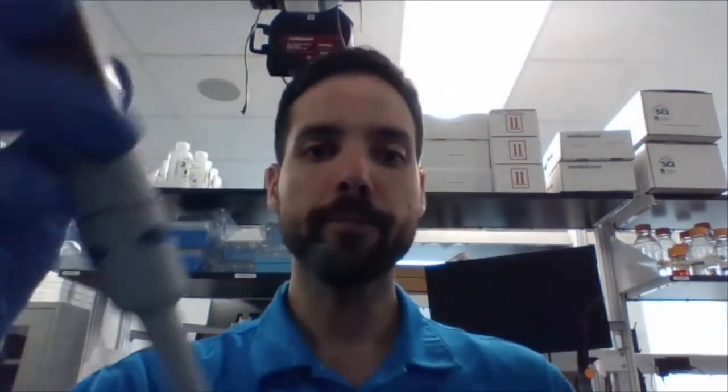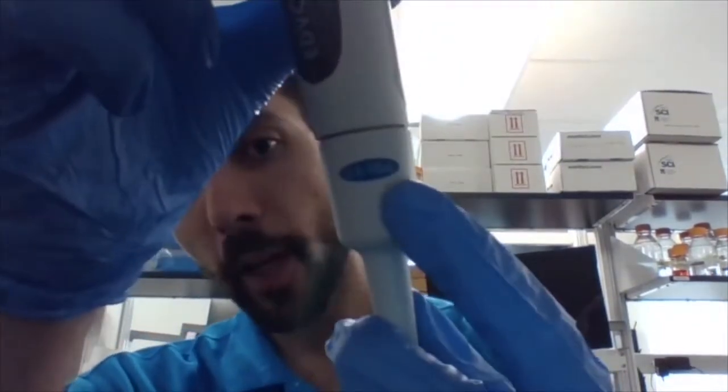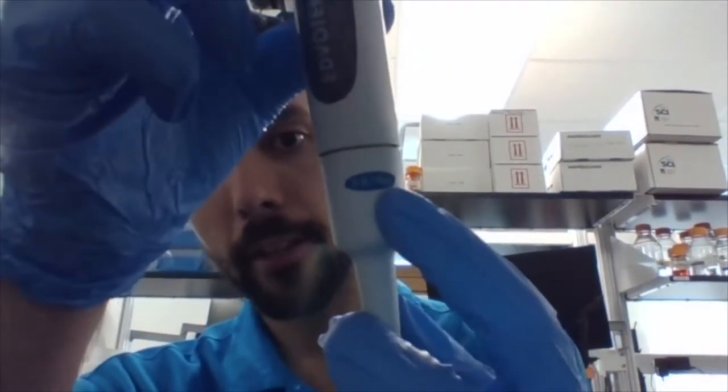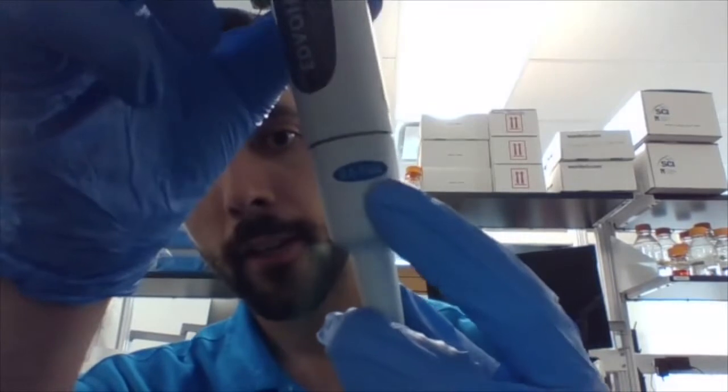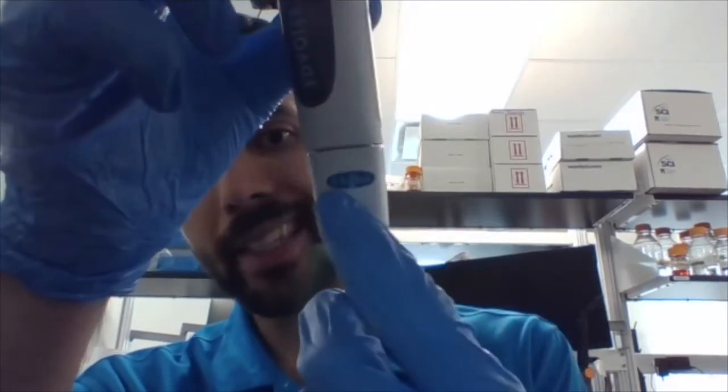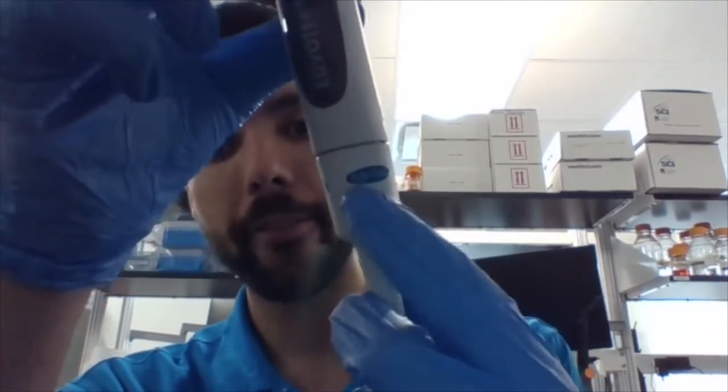And then I have my P100. And my P100, it says that the maximum volume it can pick up is 100. The smallest volume it can pick up is 10 microliters. And then I have my P10. P10 refers to the maximum volume I can pick up. The most I can pick up with it is 10 microliters. And then the least I can pick up is 0.5 microliters, so half a microliter.